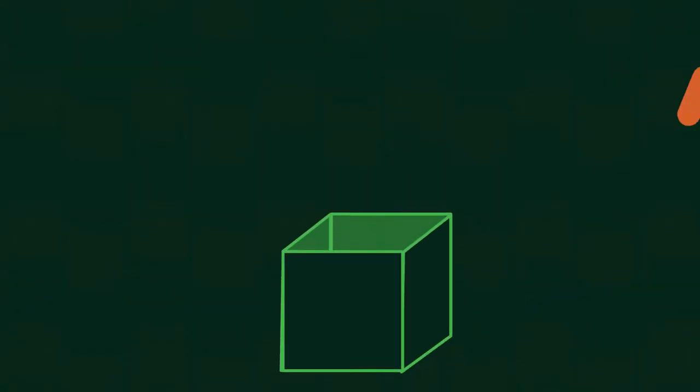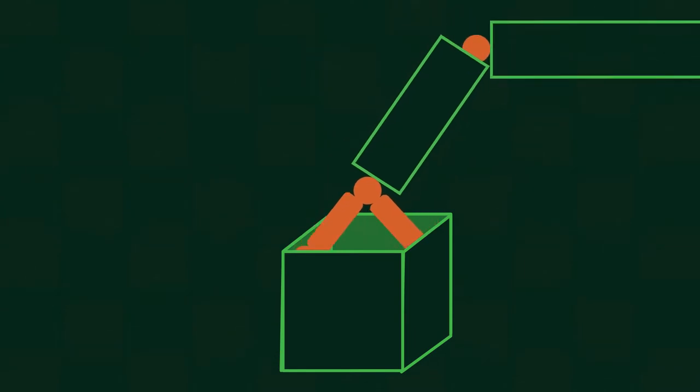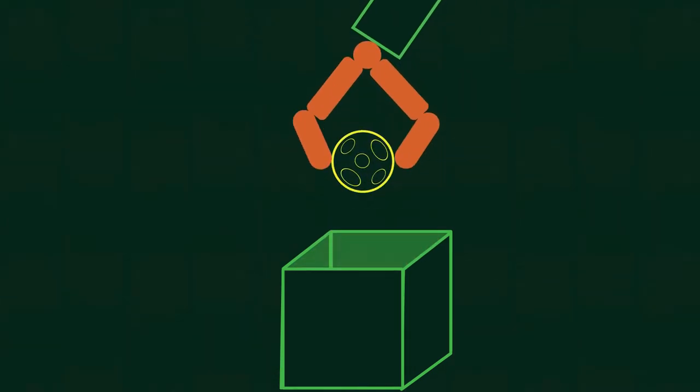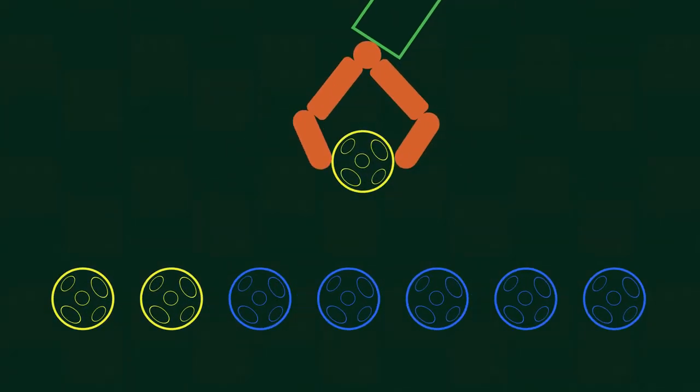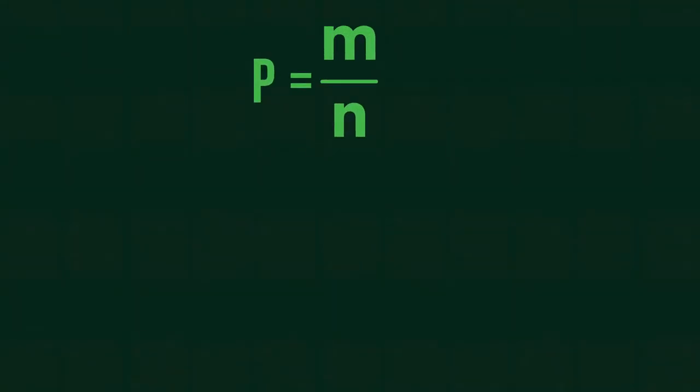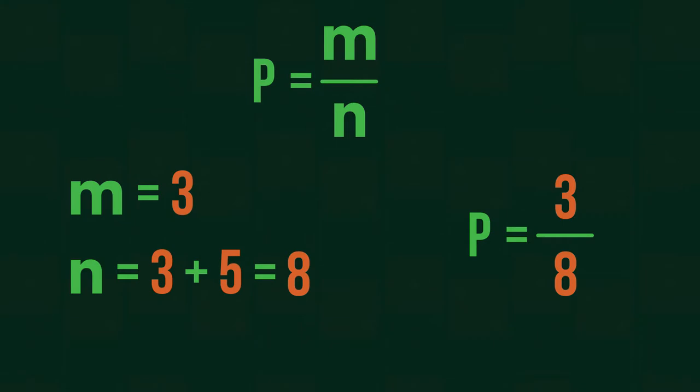For example, what's the probability of getting a yellow ball randomly from a box if there are 3 yellow and 5 blue balls in it? We already know that we only need to find the number of successful outcomes, which is 3, and divide it by the number of all outcomes, which is 3 plus 5, which equals 8, so the probability is 3 eighths.